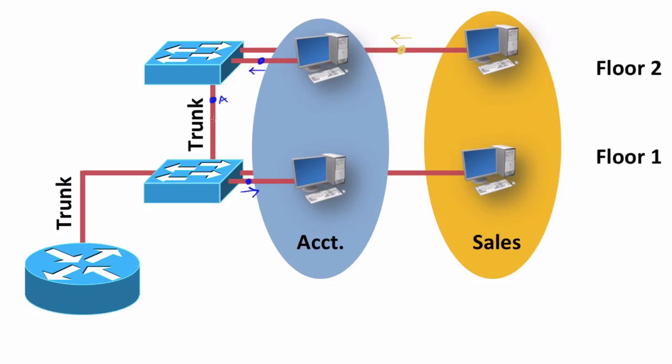When the top switch is sending the frame down to the bottom switch, it's colored differently. It's marked differently. When the bottom switch gets it, it sees based on the tag on that frame that it belongs to the sales VLAN.